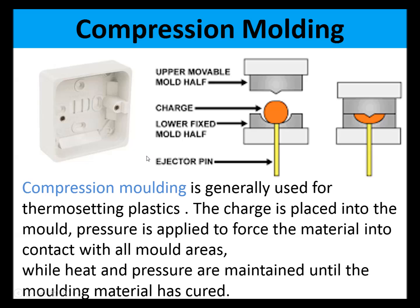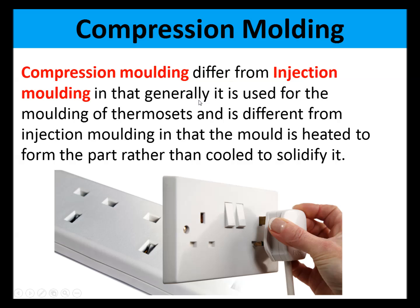Compression molding is used for thermosetting plastics. A charge — generally a paste of thermosetting plastic material — is placed into the mold, the mold closes, and pressure is applied to force it into the correct shape. Heat and pressure are maintained until the molding material is cured; the long-chain polymers crosslink and it becomes a solid item. Compression molding differs from injection molding in that it is generally used for thermosets, and the mold is heated to form the part rather than cooled to solidify it — don't get these two processes confused.